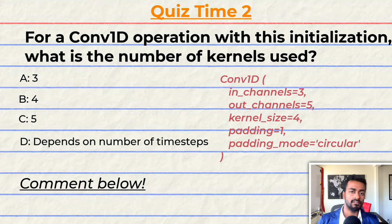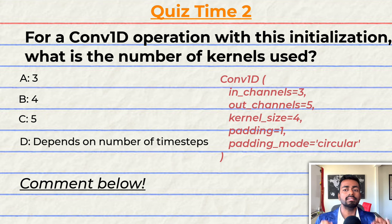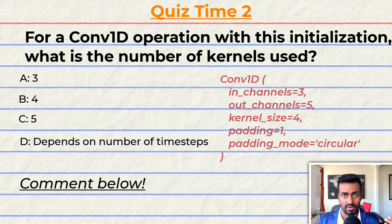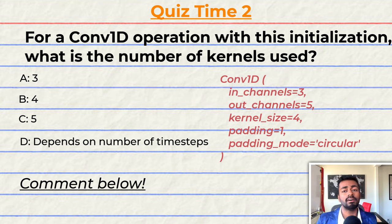Quiz time — it's that time of video again. Have you been paying attention? Let's quiz you to find out. For a convolution 1D operation with this initialization, what is the number of kernels used? A: 3, B: 4, C: 5, or D: it depends on the number of timestamps in the input. Comment your answer down below and let's have a discussion. That's going to do it for quiz time and pass two of this explanation, but keep paying attention because I will be back to quiz you.